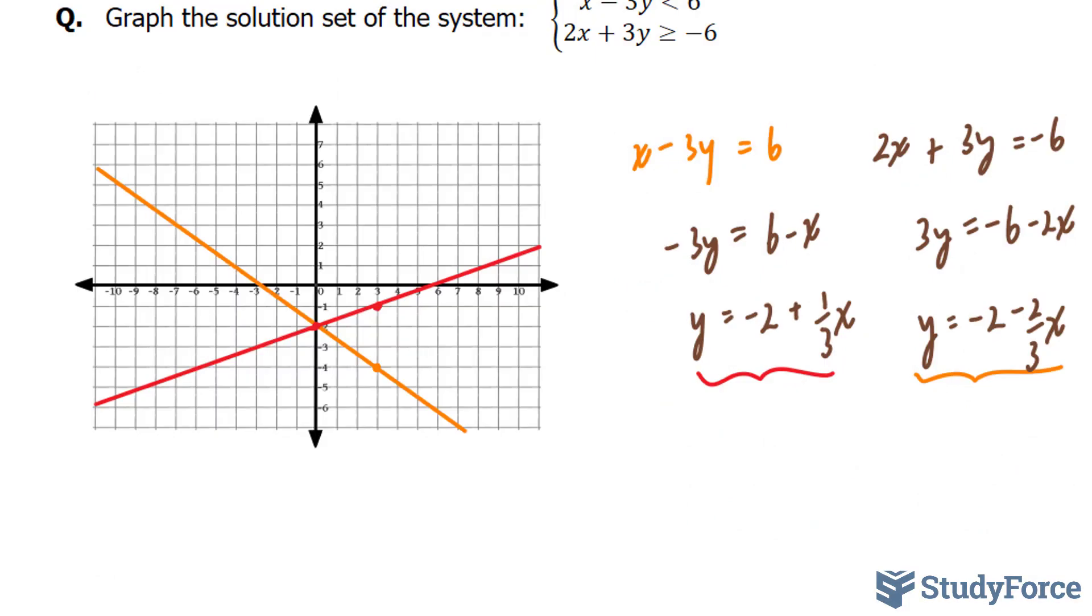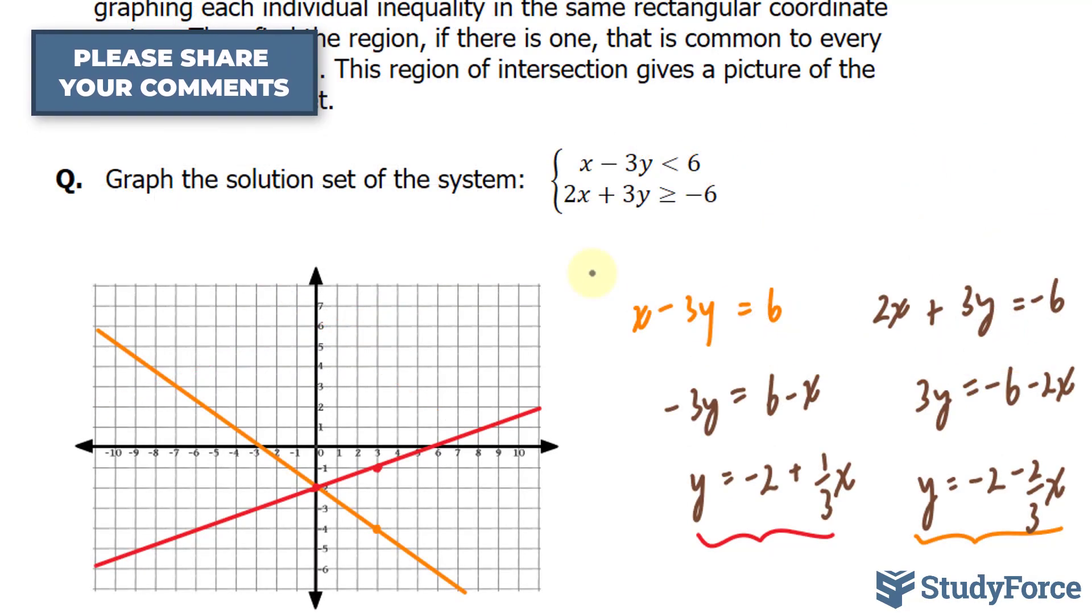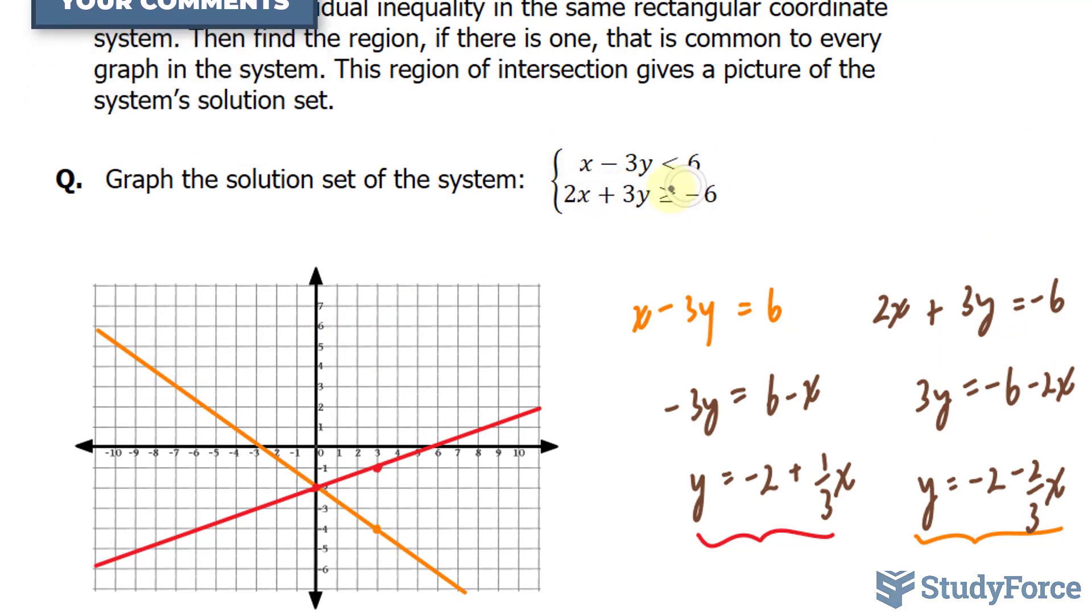Now that I've graphed these two lines as if they were not inequalities, keep in mind that for the second inequality, this part, it was greater or equal to negative 6. This means we keep it as a solid line. In other words, this orange one remains solid. This one, on the other hand, is less than 6 and it's not equal to 6. Therefore, the red line should be dashed.